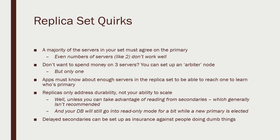Replica sets only address durability — we haven't talked about scaling out to big data yet. If your replica set goes down for whatever reason, your database is down. There is a way to read from secondaries, but that's generally not recommended. One neat thing about replica sets is something called a delayed secondary, where you set up a time delay between the replication from primary to a specific secondary node as insurance against doing something stupid. For example, with a one-hour delay, if you accidentally drop an entire database, you can shut things down and restore from that delayed secondary to get back to where you were an hour ago.